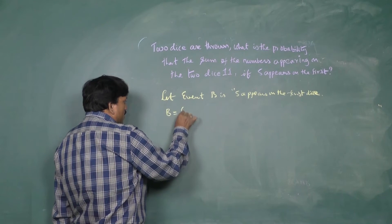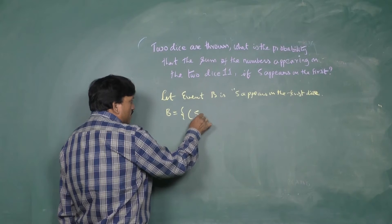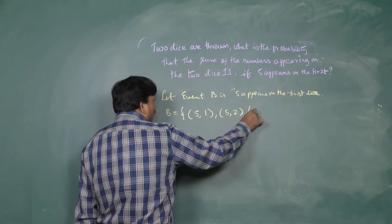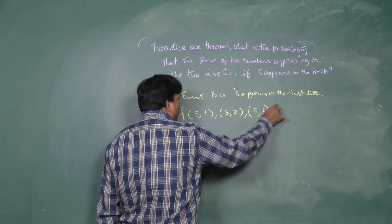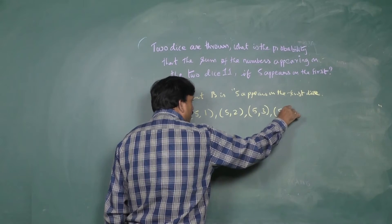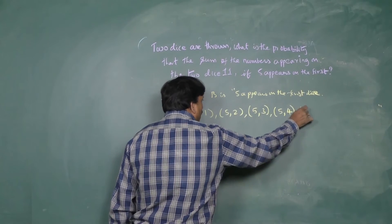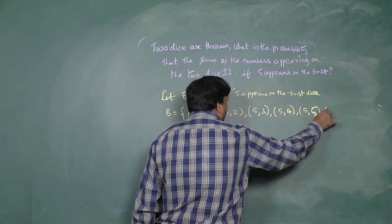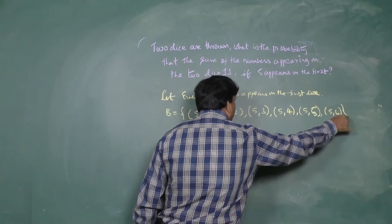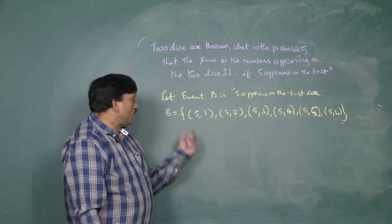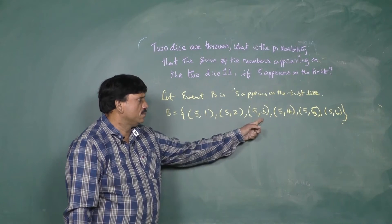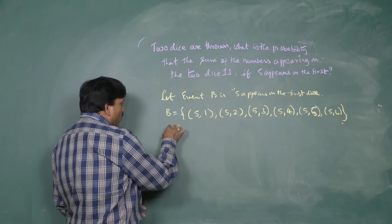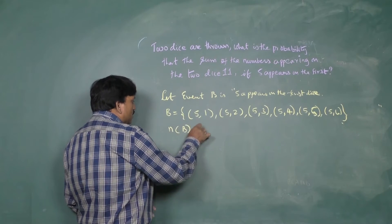For set B, five is fixed on the first die, and the second die can be one, two, three, four, five, or six — giving outcomes (5,1), (5,2), (5,3), (5,4), (5,5), (5,6). So the total number of elements in B is six.